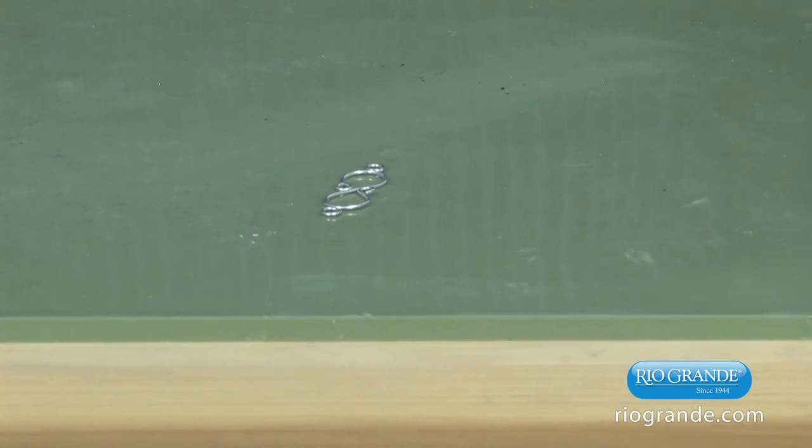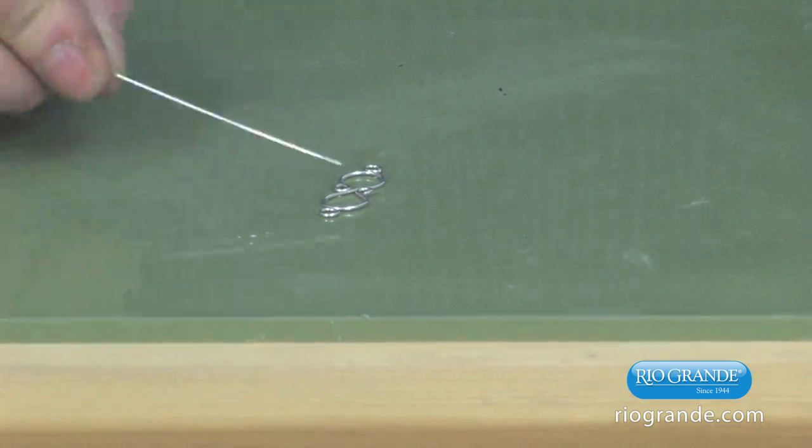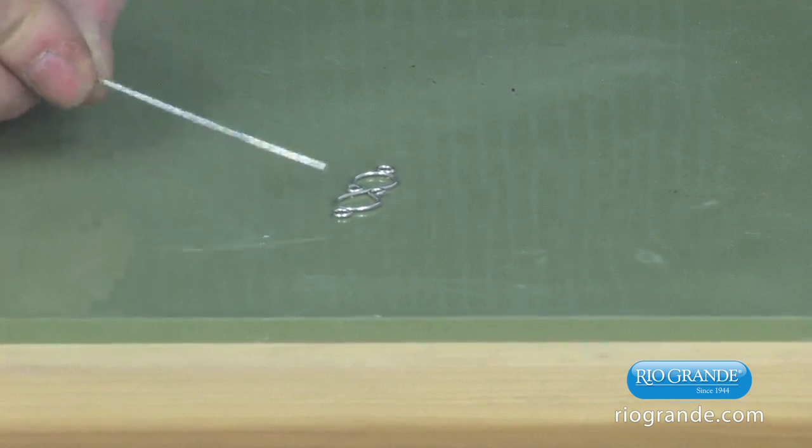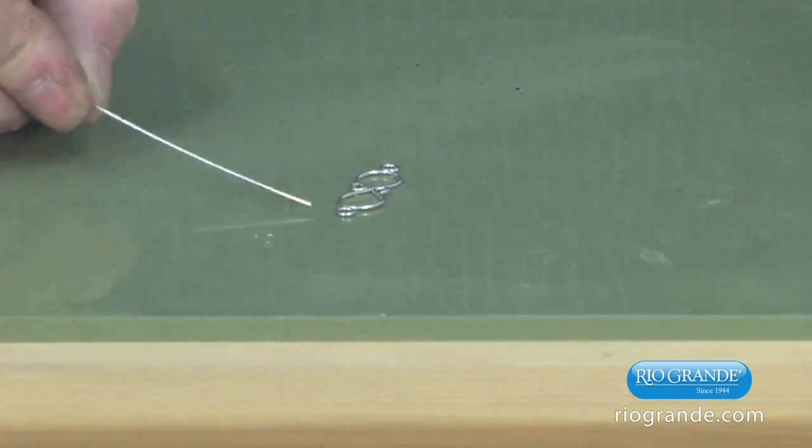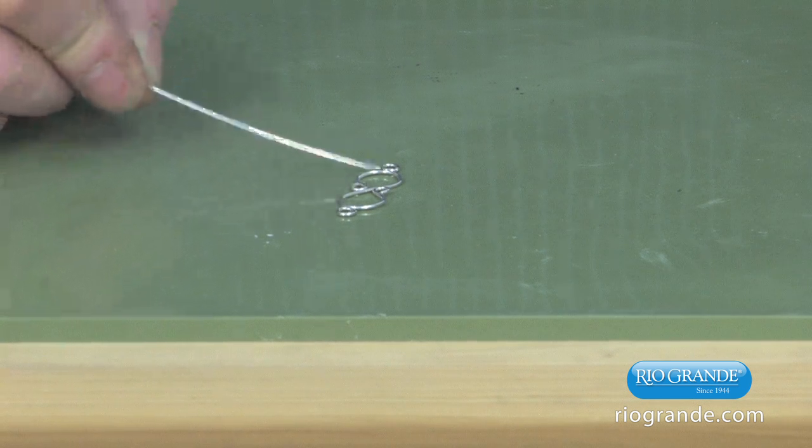After I formed the S-hook and soldered the three places on the S-hook, the next step was to solder a jump ring on each end of the S-hook.